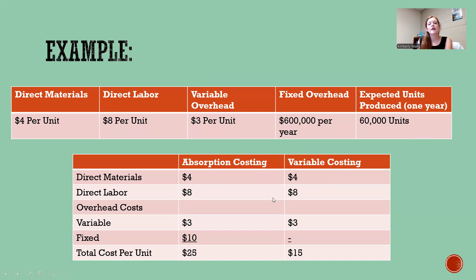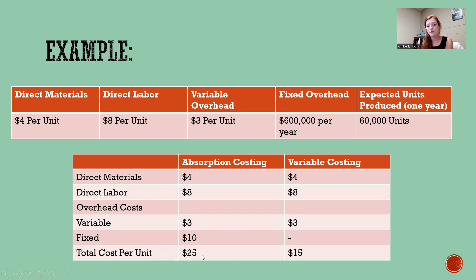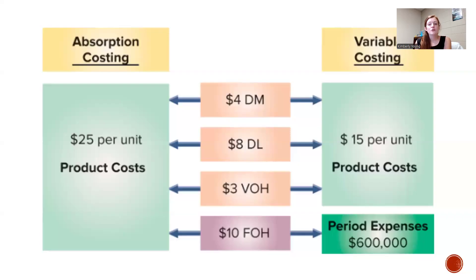With $600,000 in fixed overhead and 60,000 units expected, here's how absorption costing compares to variable costing. Under both methods, you have direct materials and direct labor in product cost. For absorption, you'd also add $3 variable overhead and $10 fixed overhead per unit ($600,000 ÷ 60,000 units), giving a product cost of $25 per unit. Under variable costing, you exclude fixed overhead, so the product cost is just $15 per unit.